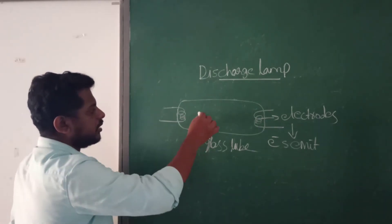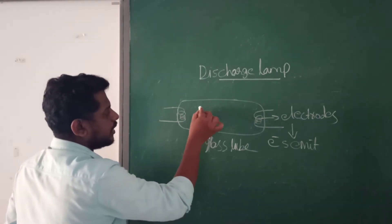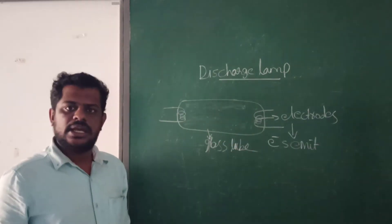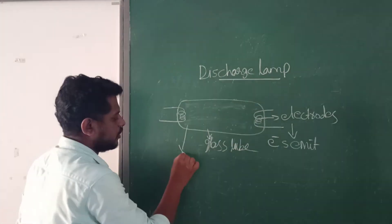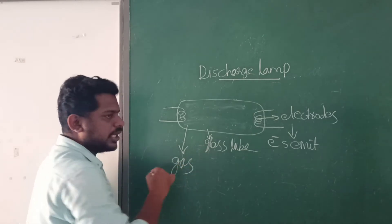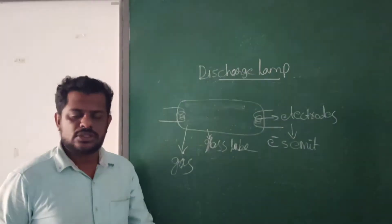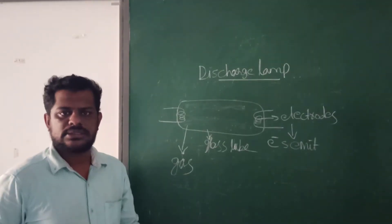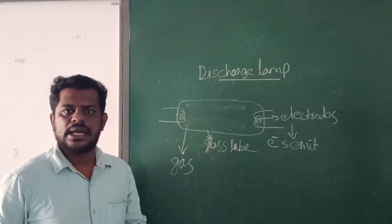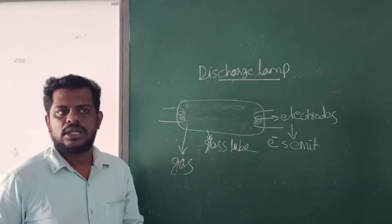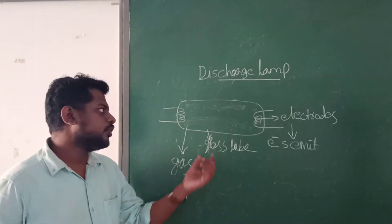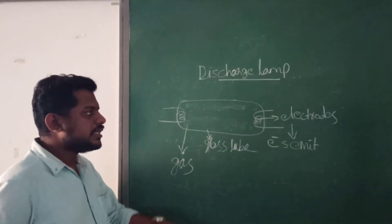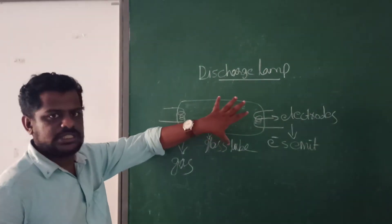The third component is a suitable gas filled inside this glass tube. Suitable gas means mercury vapor, sodium gas, hydrogen gas, neon, or nitrogen — these are used as the gas inside the discharge lamp. This is the structure of the discharge lamp.